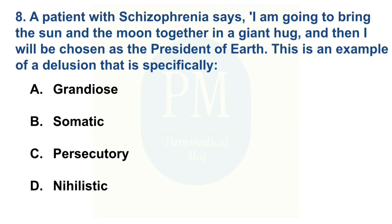A patient with schizophrenia says, 'I am going to bring the sun and the moon together in a giant hug, and then I will choose as the president of earth.' This is an example of a delusion that is specifically: Option A: Grandiose. Option B: Somatic. Option C: Persecutory. Option D: Nihilistic. The correct option is Option A: Grandiose.